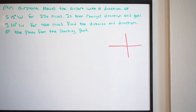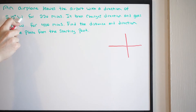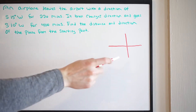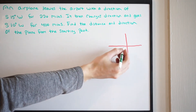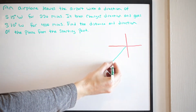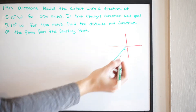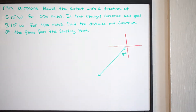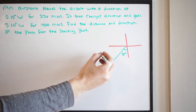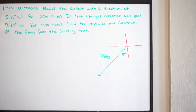Now we're going to go ahead and put on our vector. It says south to west — that's how we read this direction — with an angle of rotation of 15 degrees. So it starts south to west with an angle of rotation of 15 degrees. And the distance here is going to be 220 miles. So there's our first vector.